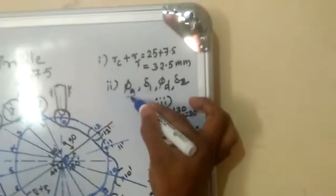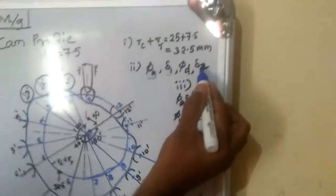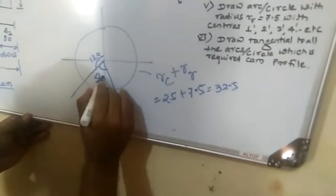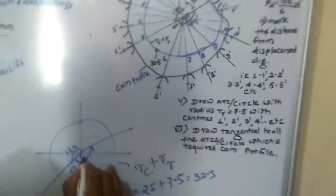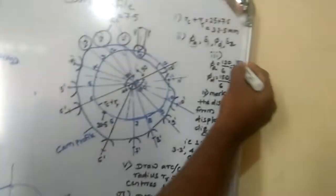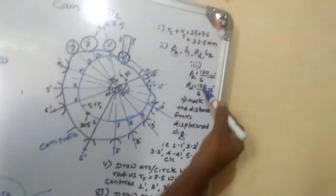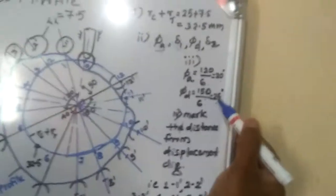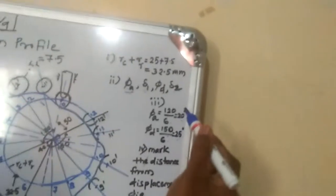Next, you have to mark the angles on the circle. Mark the rise angle Pi-A, dwell delta-1, return, and second dwell delta-2. The rise is 120 degrees — mark it on the circle. Next is the dwell at 40 degrees, then descending at 150 degrees, and the remaining delta-2 automatically comes as 50 degrees. Then divide the rise into 6 equal divisions: 120 divided by 6 gives 20 degrees per interval. For the descending, 150 divided by 6 gives 25 degrees per interval.